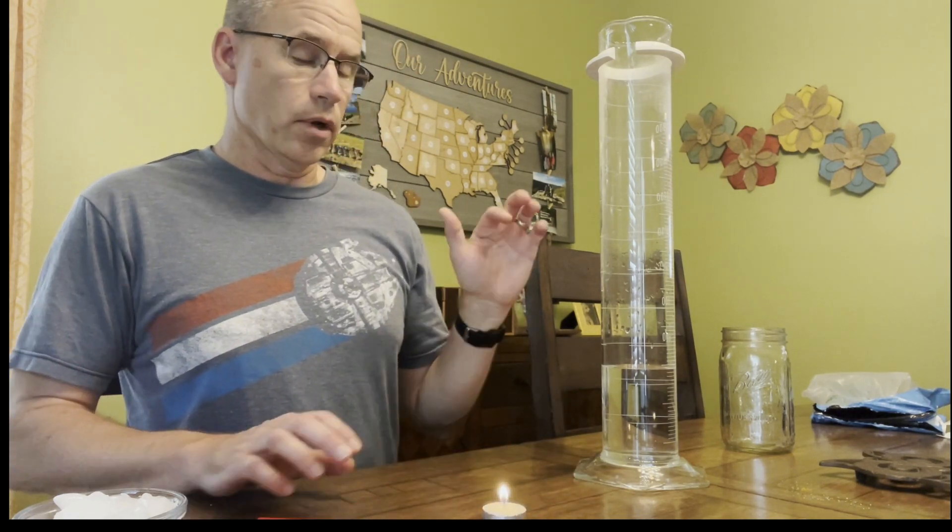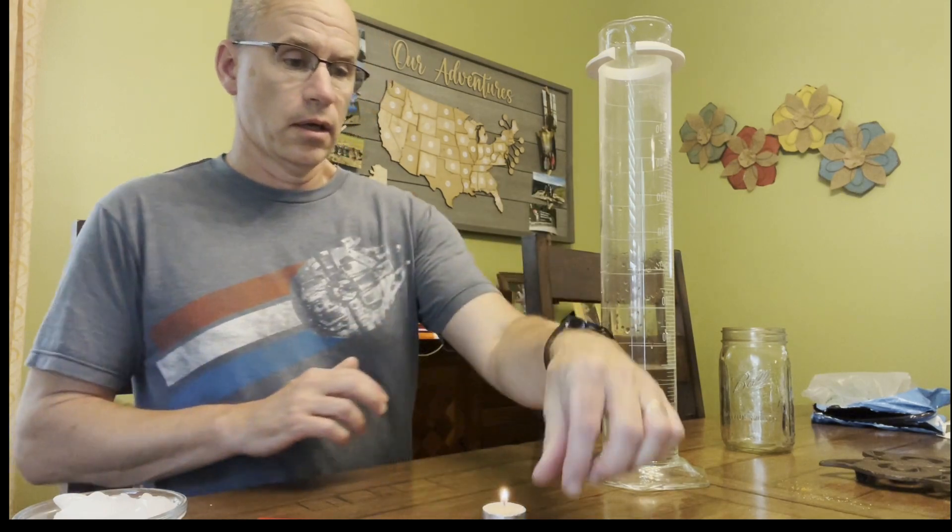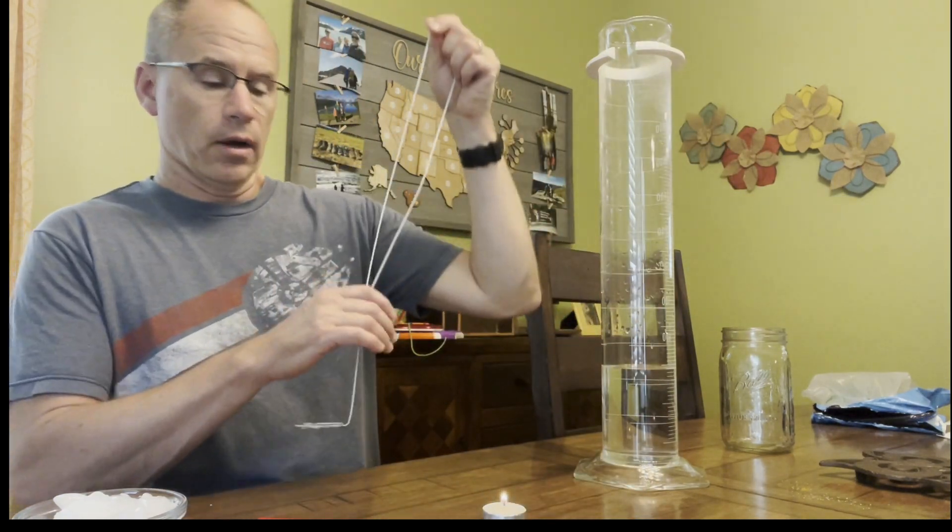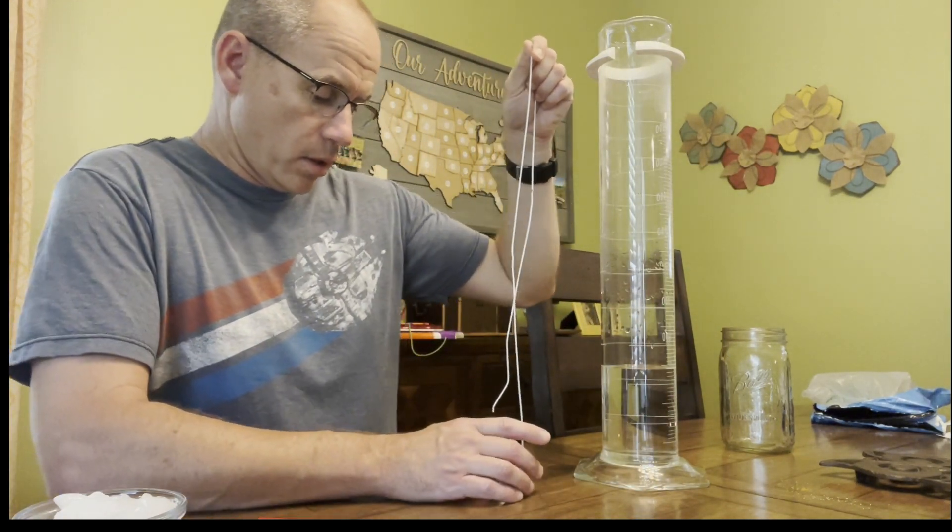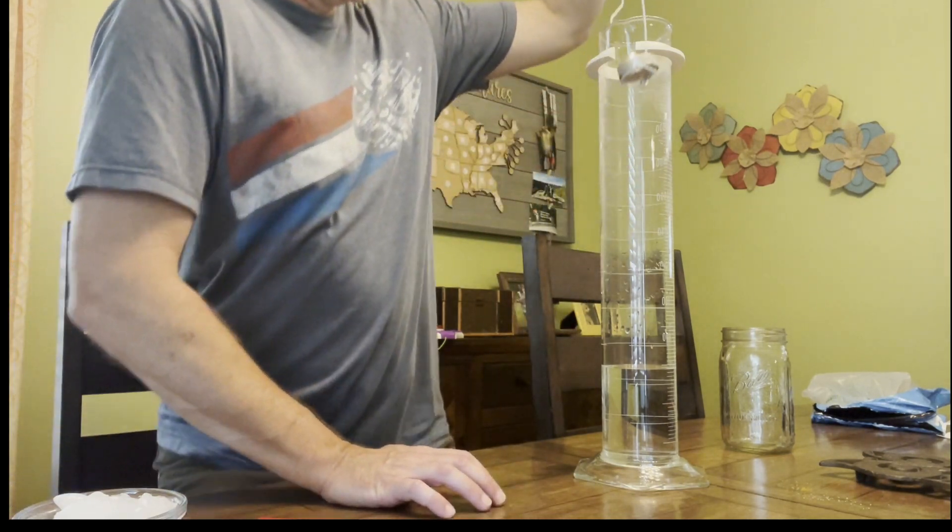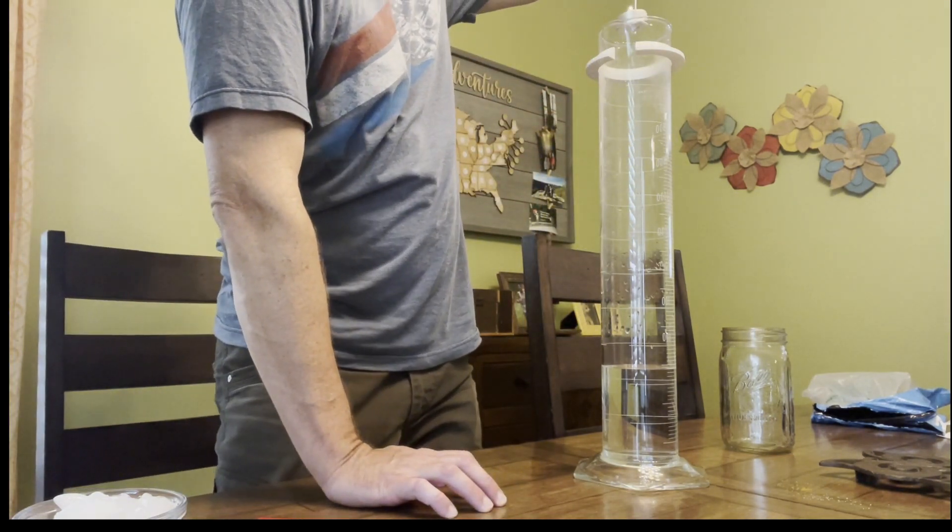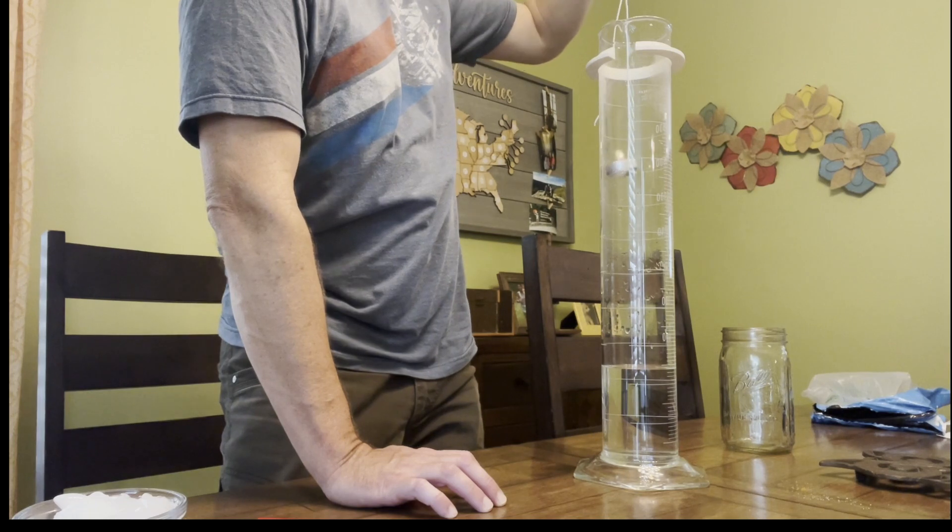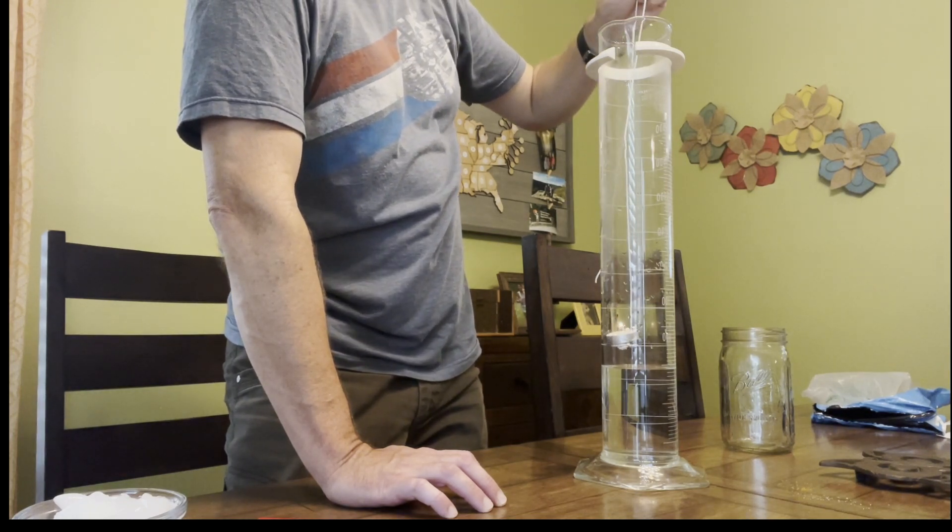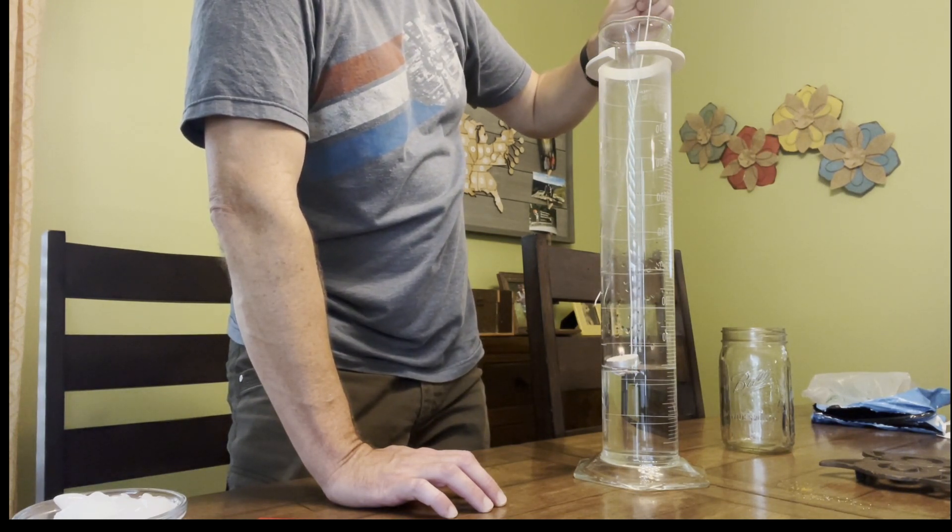We're going to lower the candle down inside the graduated cylinder. It's just a coat hanger that I cut open. We'll lower this down. This is a tea light, and the nice thing about using a tea light is they float, so if we lower that carefully, there we go.